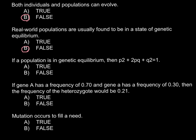And the next statement is if a population is in genetic equilibrium, then p squared plus 2pq plus q squared equals 1, and this is a true statement.